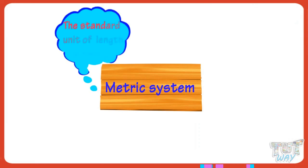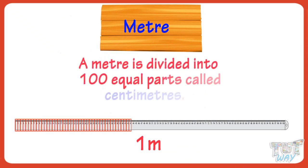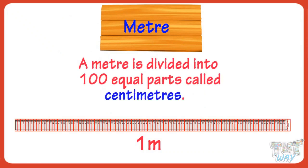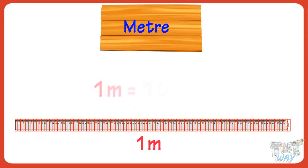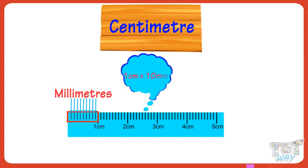The standard unit of length is meter. A meter is divided into 100 equal parts called centimeters. One meter equals 100 centimeters. One centimeter is divided into 10 equal parts called millimeters. One centimeter equals 10 millimeters.